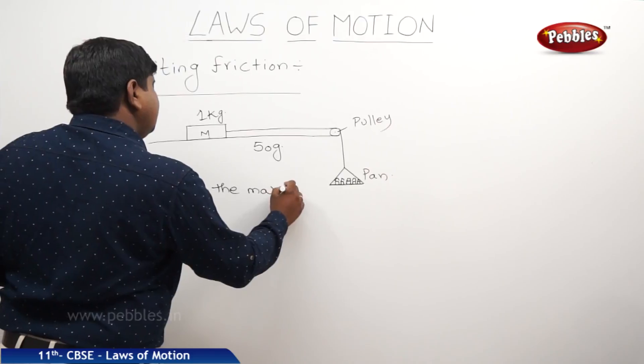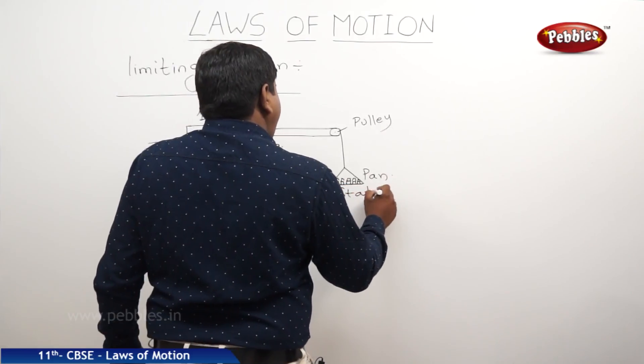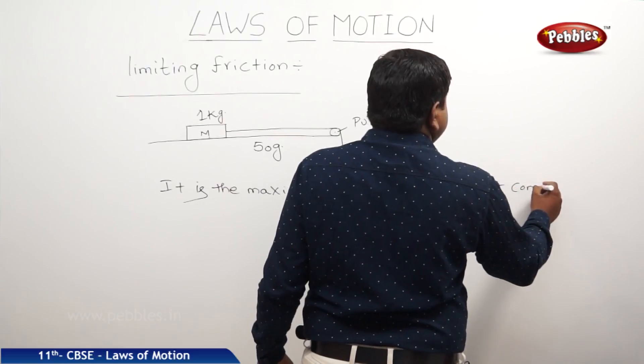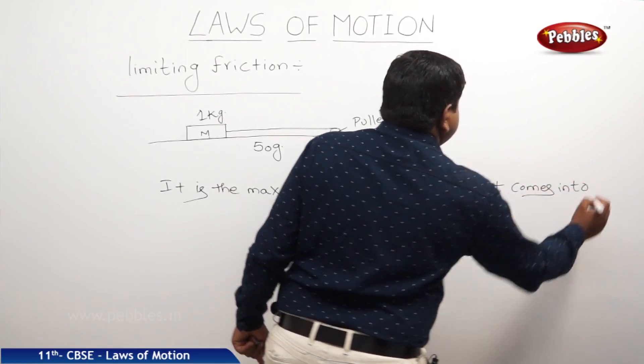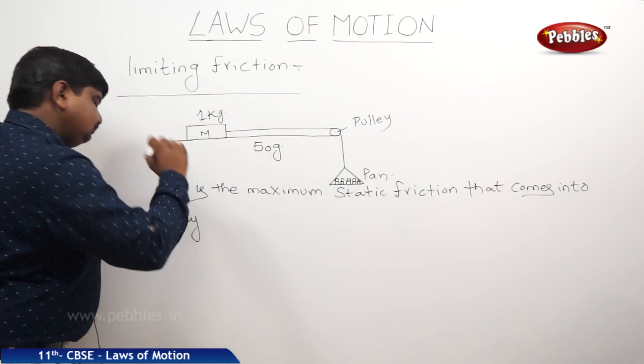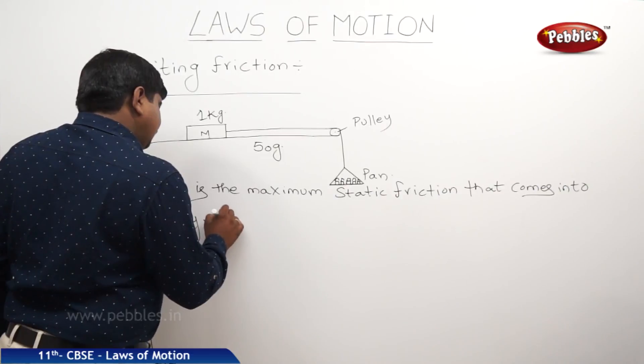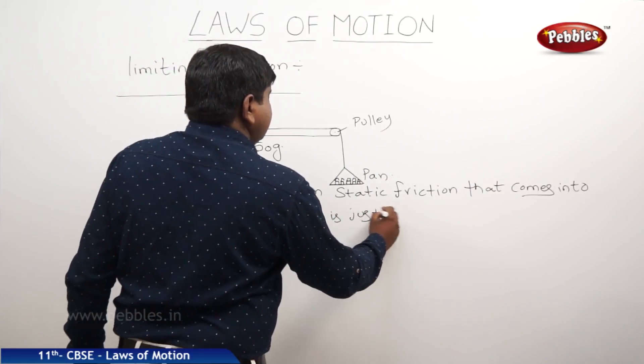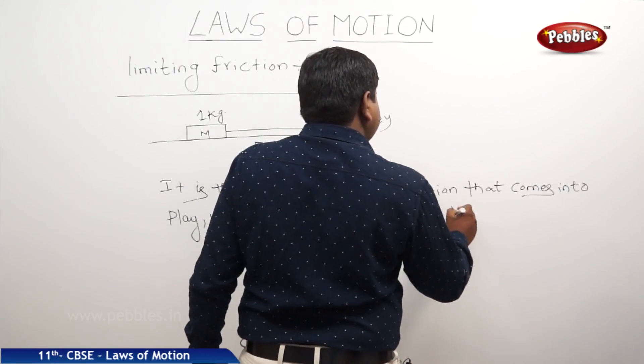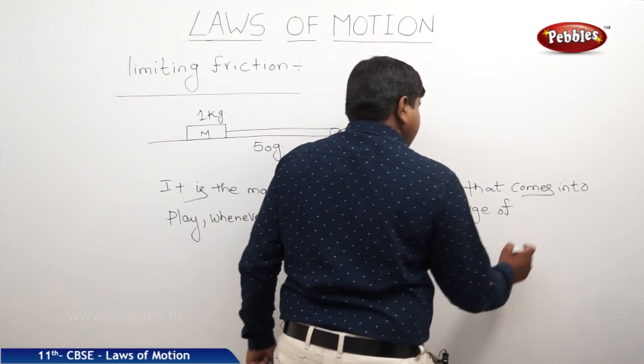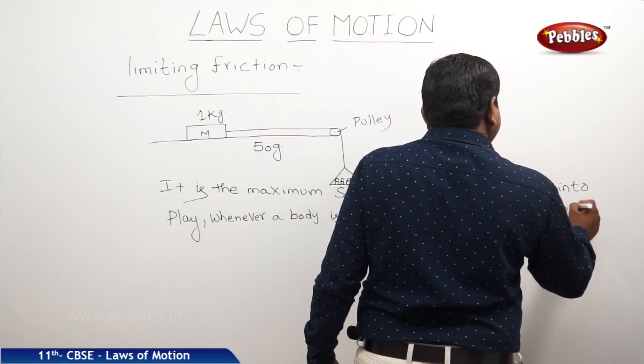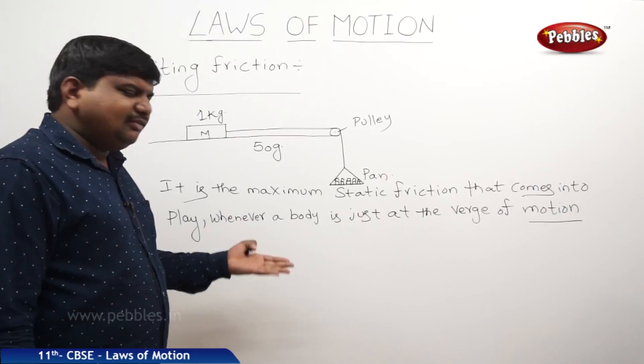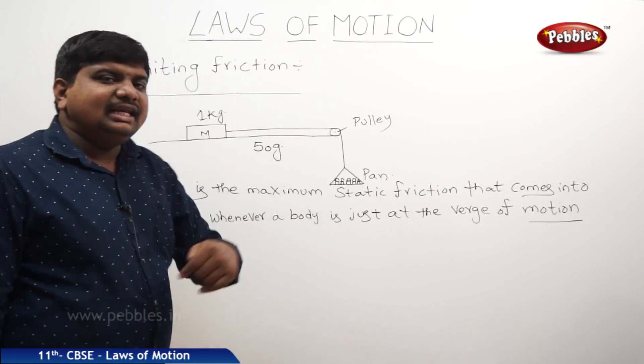It is the maximum static friction that comes into play whenever a body is just at the verge of motion, when the body is just about to start. Up to that the body can experience the static friction. The maximum static friction experienced by the body before it starts to move is called limiting friction.